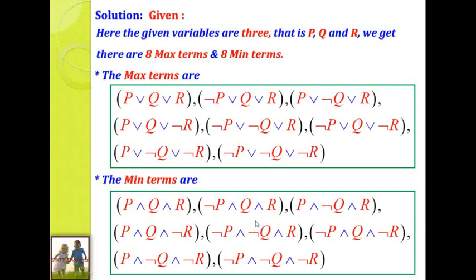We have a general formula for how many max terms and min terms we get. If the number of variables is n, then we get 2^n max terms and 2^n min terms. Here, the number of variables is 3, so n = 3, and 2^3 = 8. So we get 8 min terms and 8 max terms. Using these 8 max terms and min terms, along with the procedure of PCNF and PDNF definition, we are going to find the PCNF expression and PDNF expression.